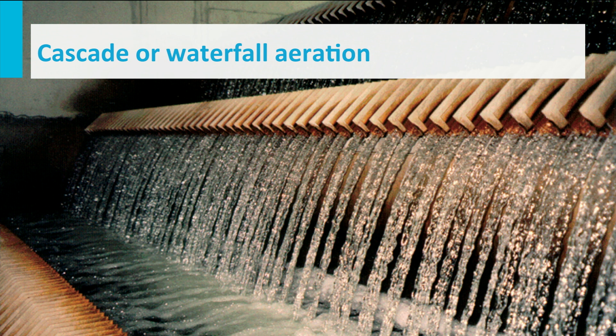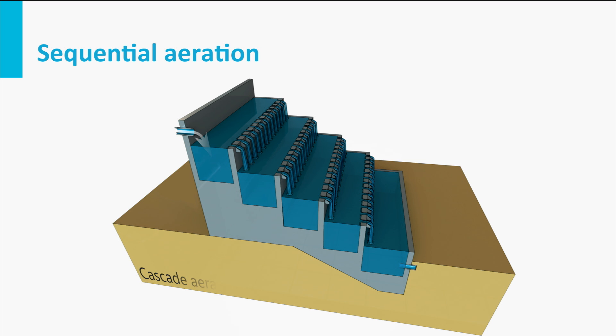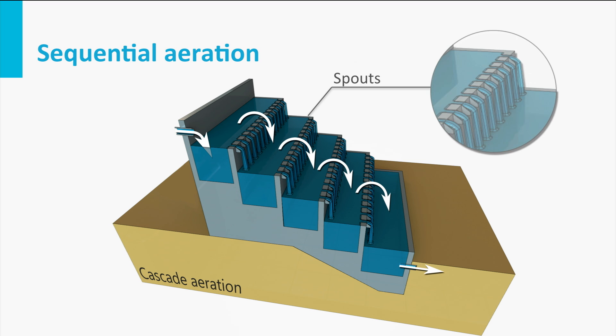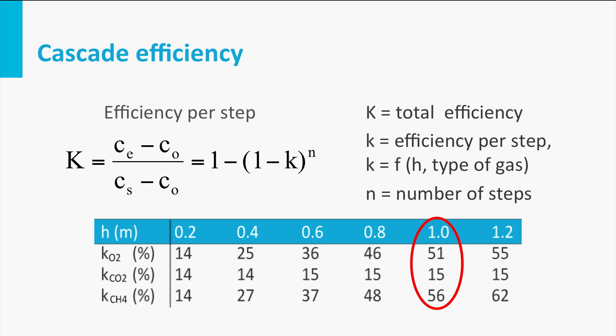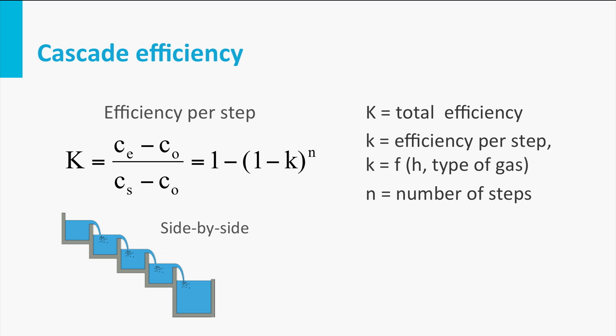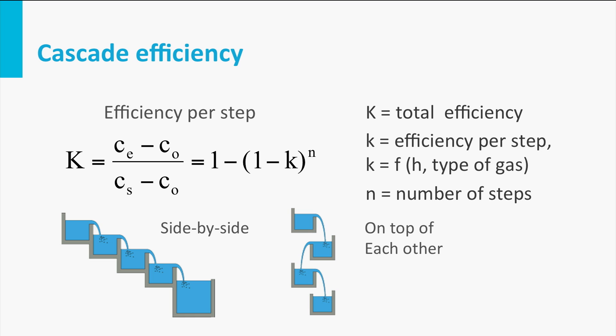Cascade or waterfall aeration divides the water into a thin layer by letting it fall over a sharp edge. The most efficient types use spouts where the water falls through. This cascading forces air bubbles into the water, and because of the turbulence, these are separated into many small bubbles. As a rule of thumb, the trough has to have a minimum depth of 66% of the fall height to obtain sufficient contact time. In practice, a maximum fall height of 1 meter per step is chosen, because efficiency barely increases above this height. A higher efficiency can be obtained by increasing the number of steps, either side by side or on top of each other. The efficiency of a cascade depends little on the hydraulic load, and is therefore a very robust way of aerating, independent of fluctuations in production capacity or iron deposits.